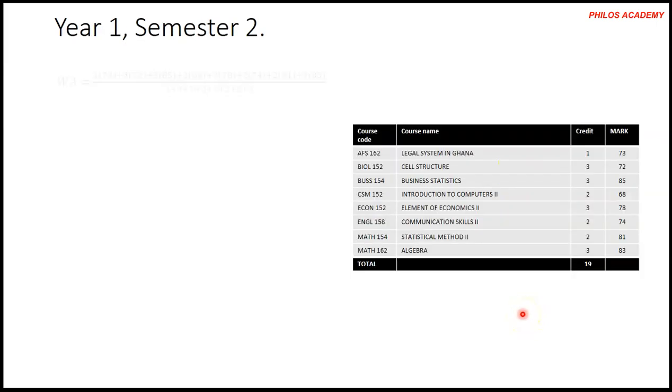For the new semester, the weighted average will be 77.53. The reason is the total point for the new semester will now be 1473 divided by total credit hours 19, so meaning for the new semester he has gotten 77.53. But this is not what they are going to record as your CWA - this is just for that particular semester, semester 2.